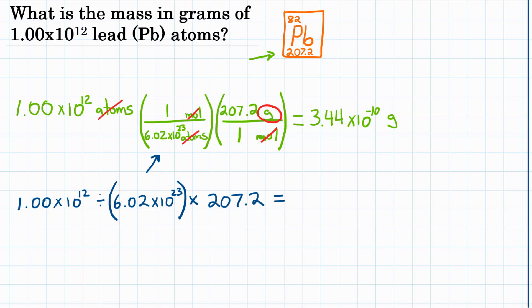All right, so what is the mass in grams of 1 times 10 to the 12th lead atoms? That would be 3.44 times 10 to the negative 10th grams.